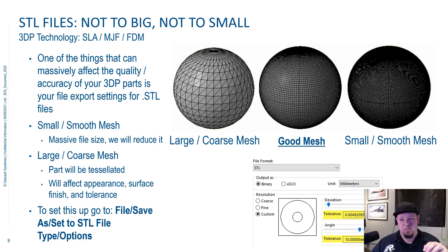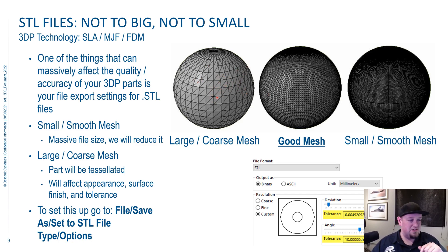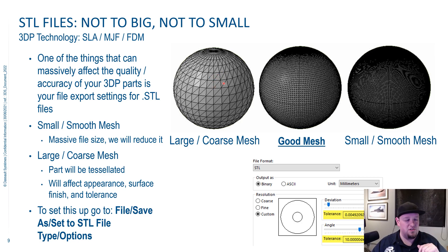What I like to help people understand is you can be too coarse with your mesh, like in this image right here. These triangles are actually going to show up in the surface of your part — the mesh is too coarse. It's a nice small file, but it's going to degrade the looks and function of your 3D printed part.